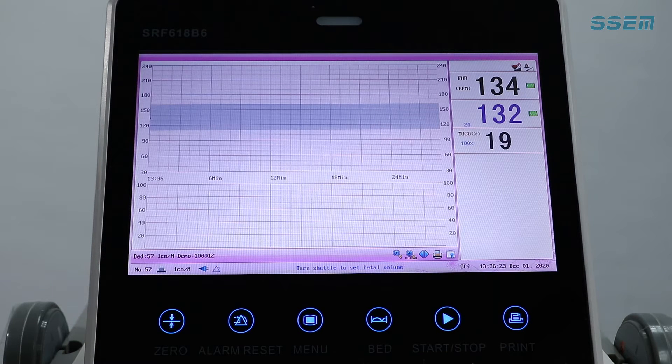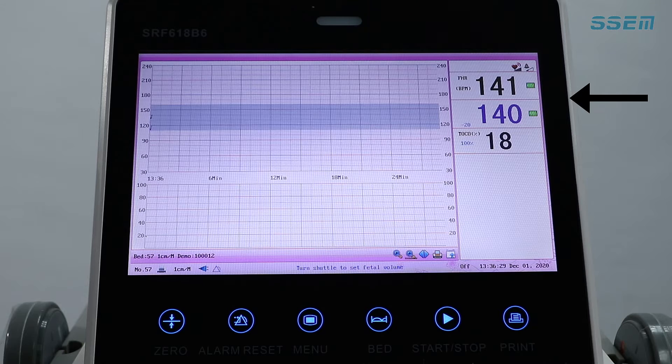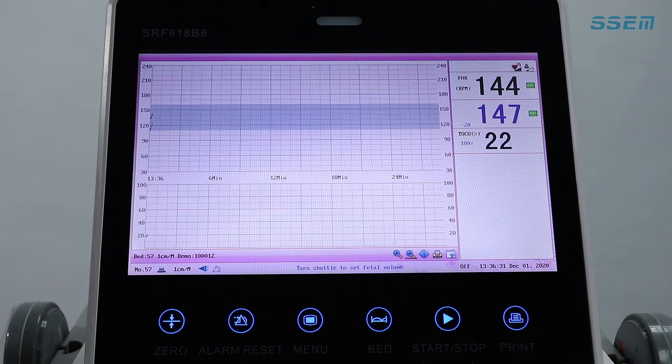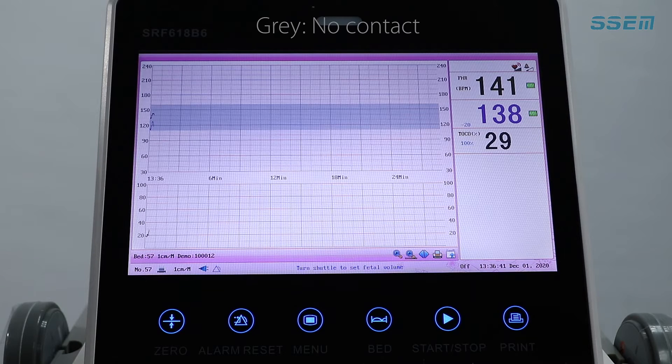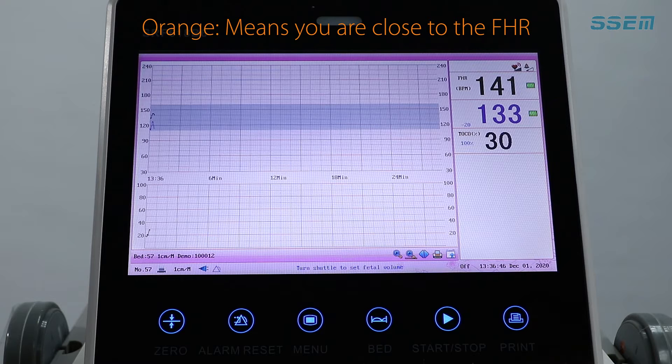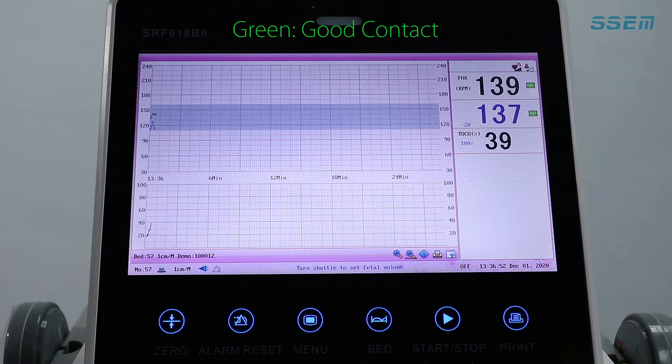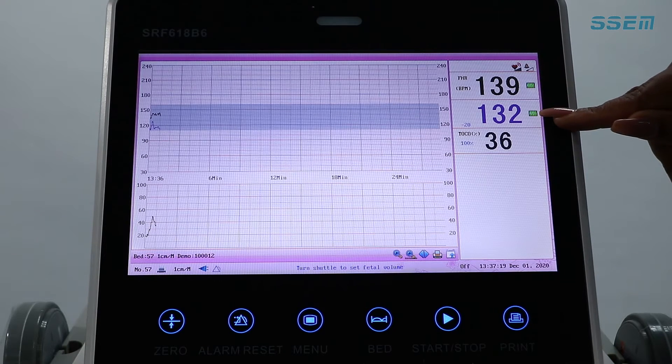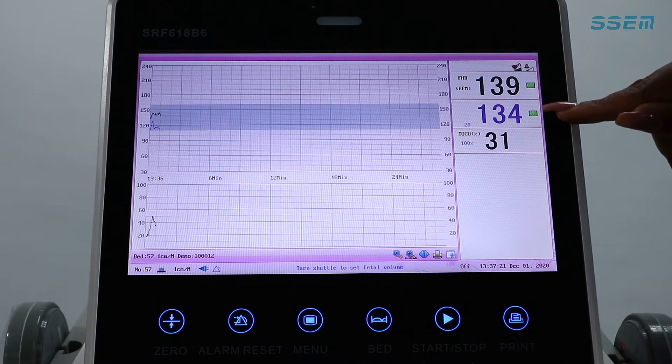Press the start button and place the transducers onto your patient. Observe the connection indicators for the FHR placements. Gray would mean that you have no connection. Orange means you are close to the FHR patient device connection. Green means good contact. These are the FHR connection indicators.